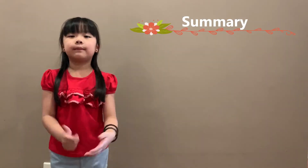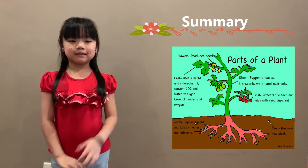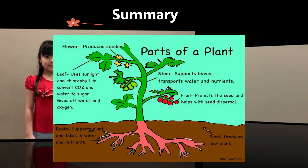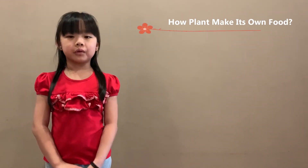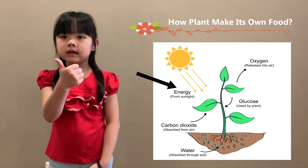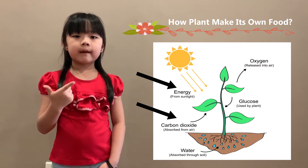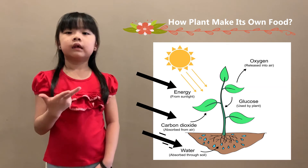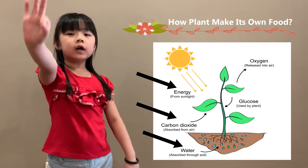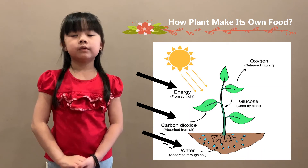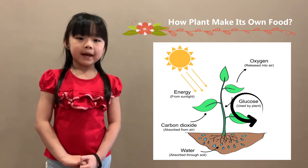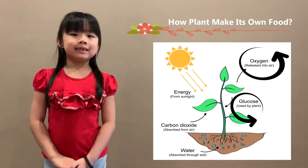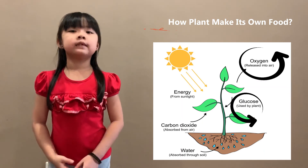Here's the summary for you — different parts of the plant. Let's learn how plants make their own food. They need sunlight, the air they breathe out called carbon dioxide, and water. With all these three things, they will produce glucose, a type of sugar for the plant. And they will release oxygen, the air they will need to breathe in.